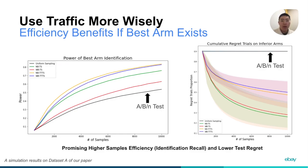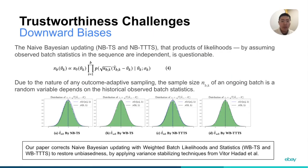Bayesian bandit algorithms outperform ABN testing with efficiency benefits on power and test regrets. However, to gain the trust of experimenters, trustworthiness is a cornerstone while rarely discussed among industry practitioners. The first trustworthiness challenge is the downward balance phenomenon. The naive Bayesian updating that uses products of likelihoods is questionable under outcome-adaptive sampling, because batch likelihoods are not independent. By applying the variance stabilizing technique, our paper corrects this with weighted batch likelihoods to restore the balance.